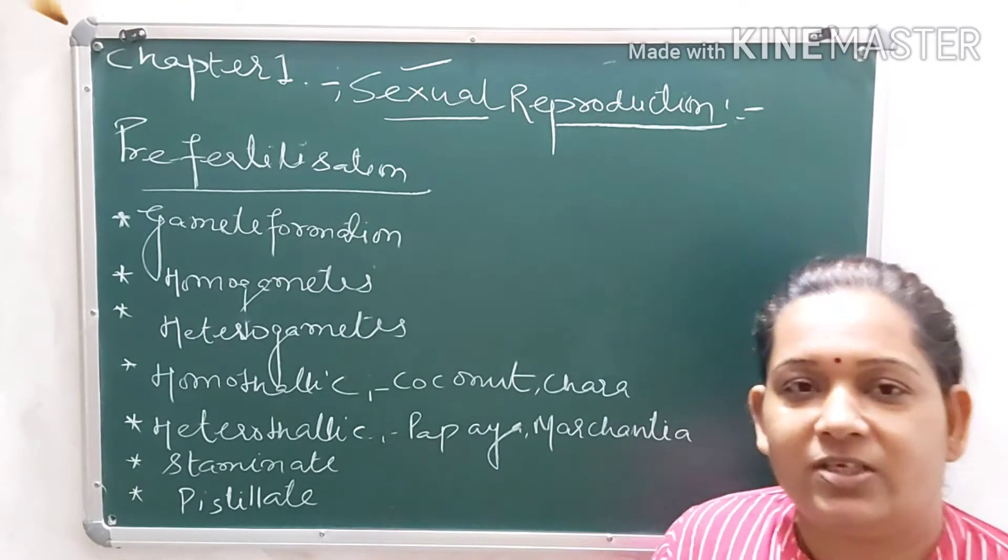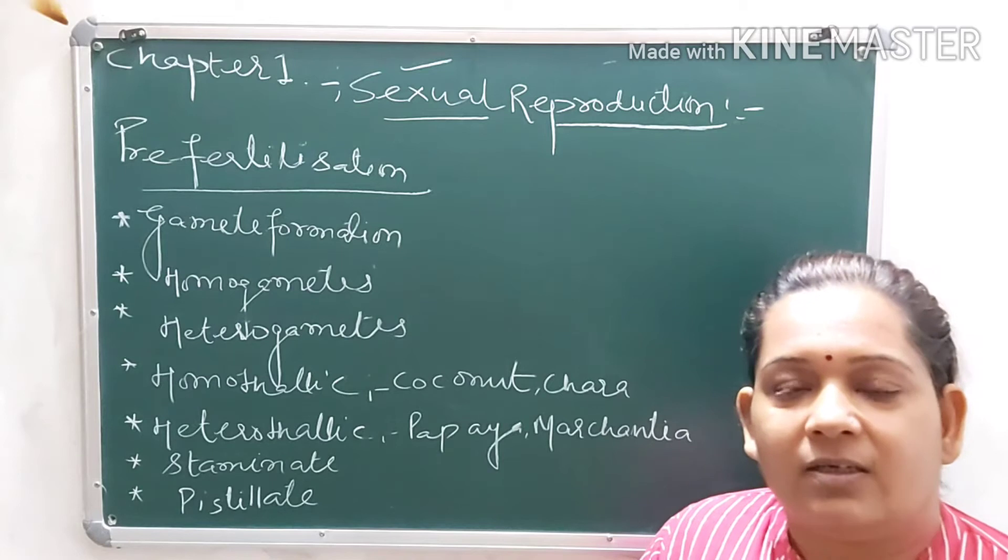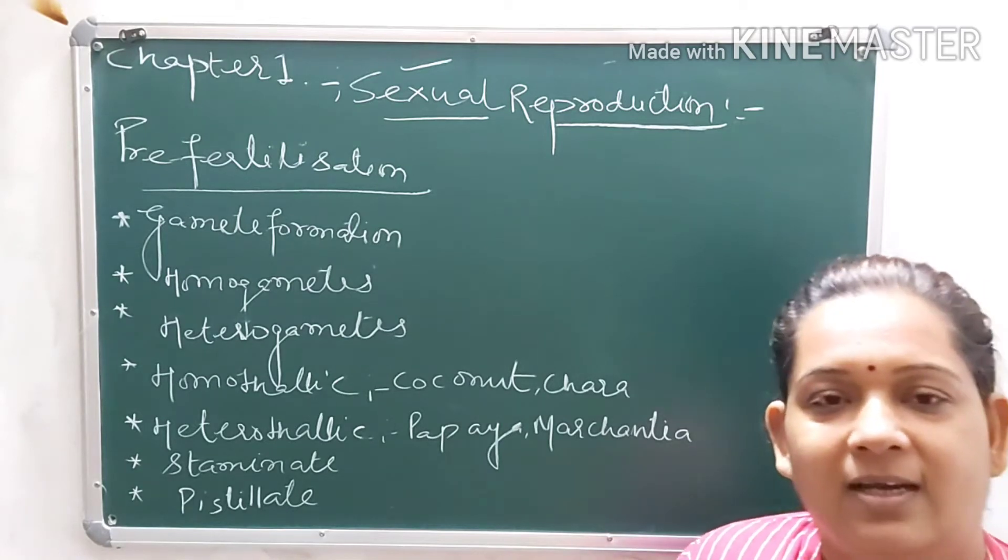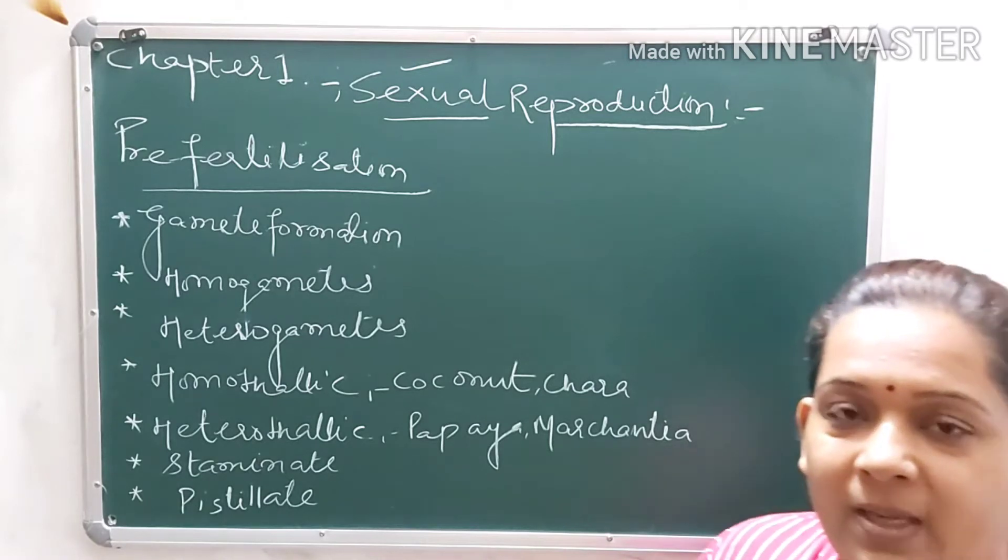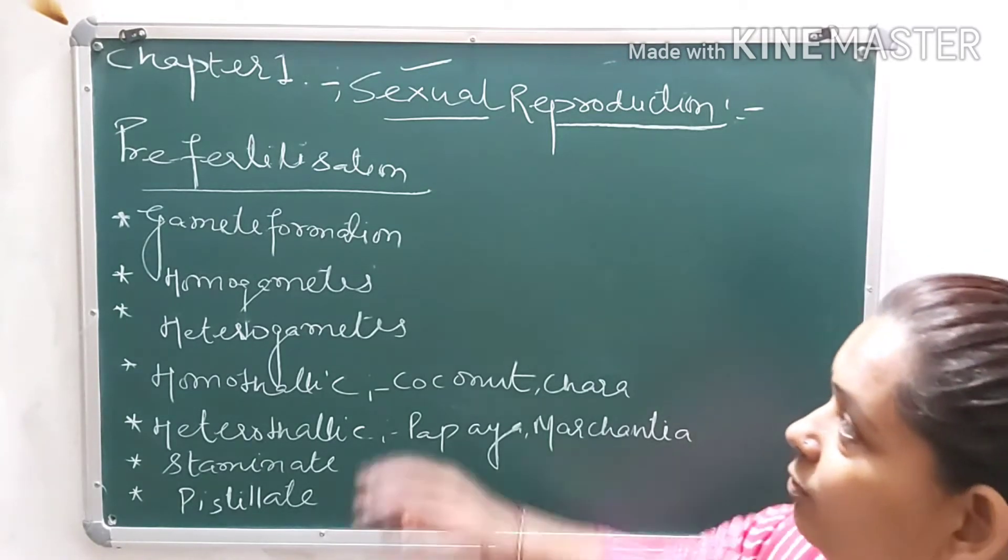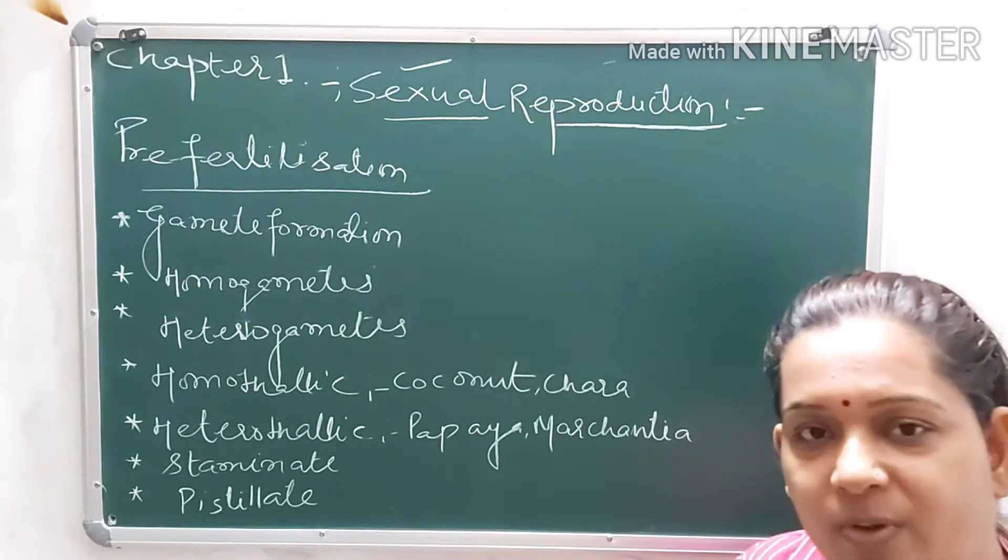Sexual reproduction means when fusion of gametes takes place. Different parents, male and female are separate. The gametes produced, fusion of gametes is termed as sexual reproduction. This is a simple definition.